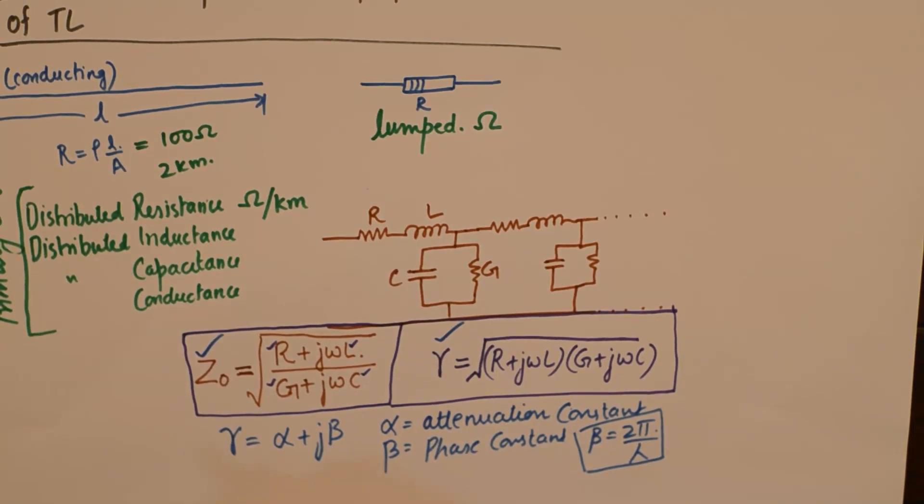But the primary thing to understand here is that transmission lines are eventually made up of some materials and materials do have inherent properties of inductance, capacitance, resistance, and conductance, which we cannot ignore at any cost. And they result in the formation of the characteristic impedance of the transmission line.